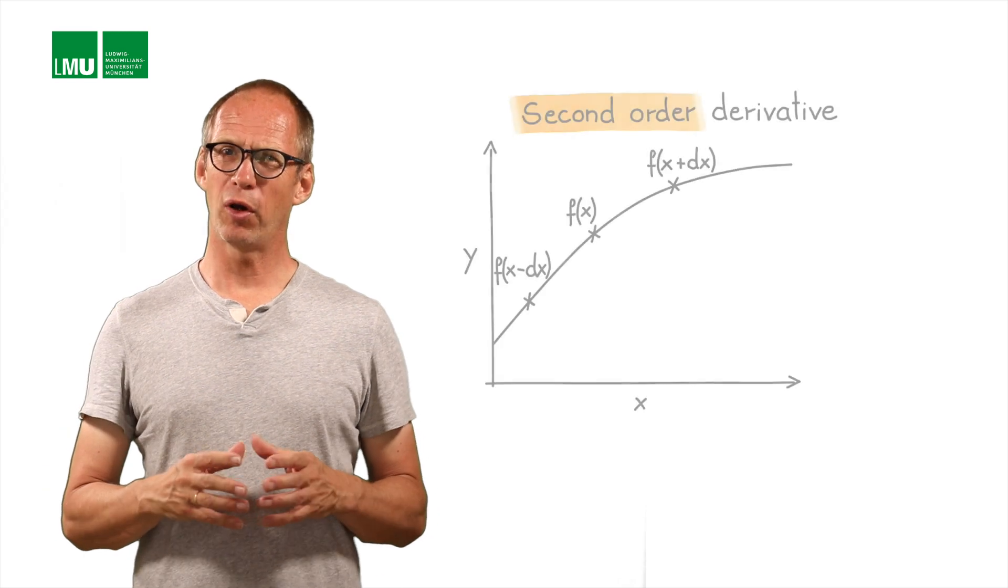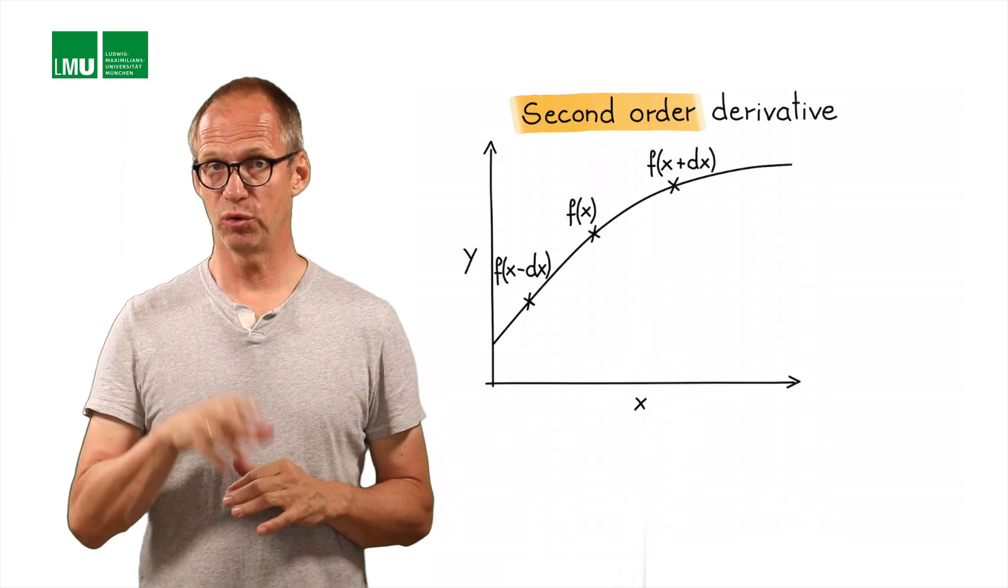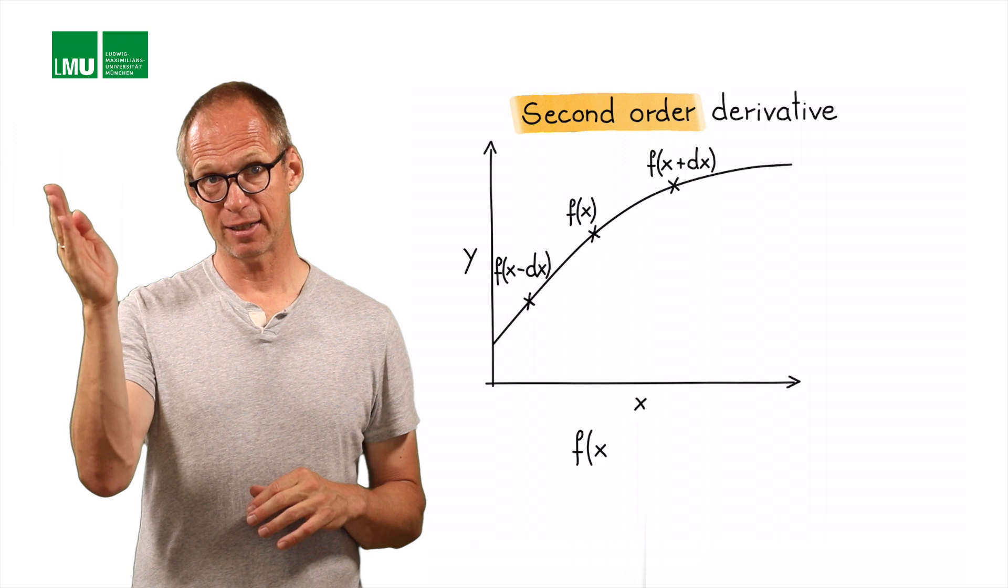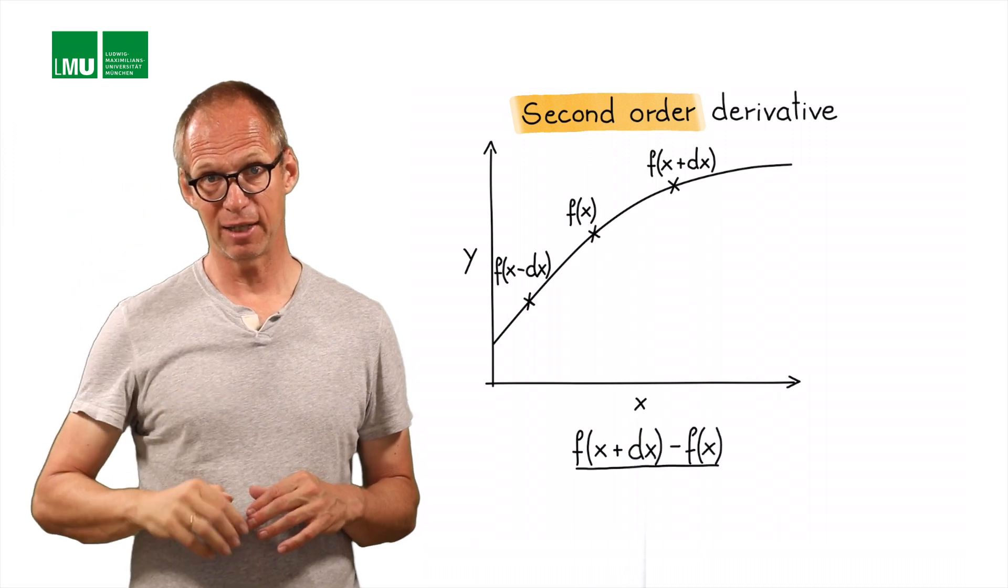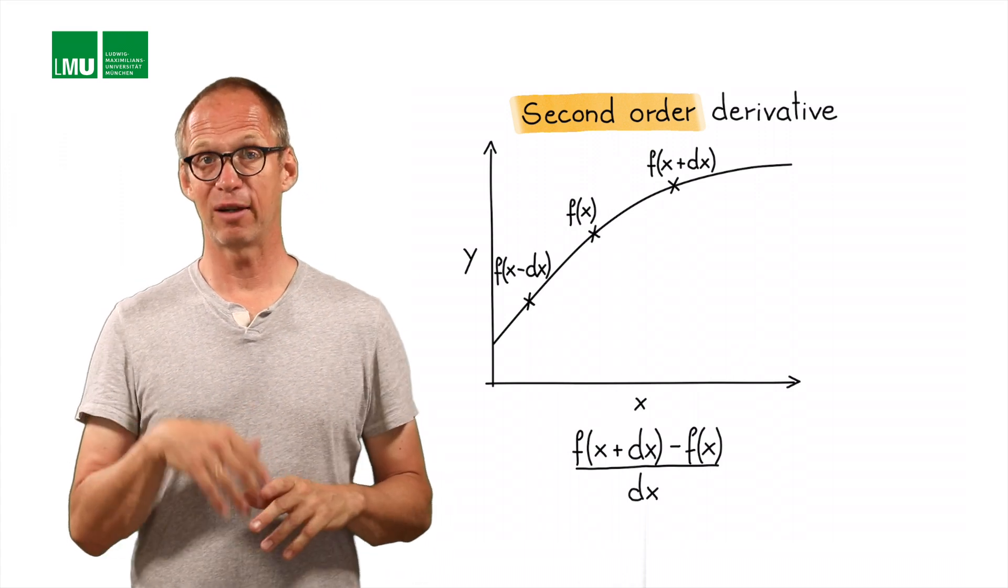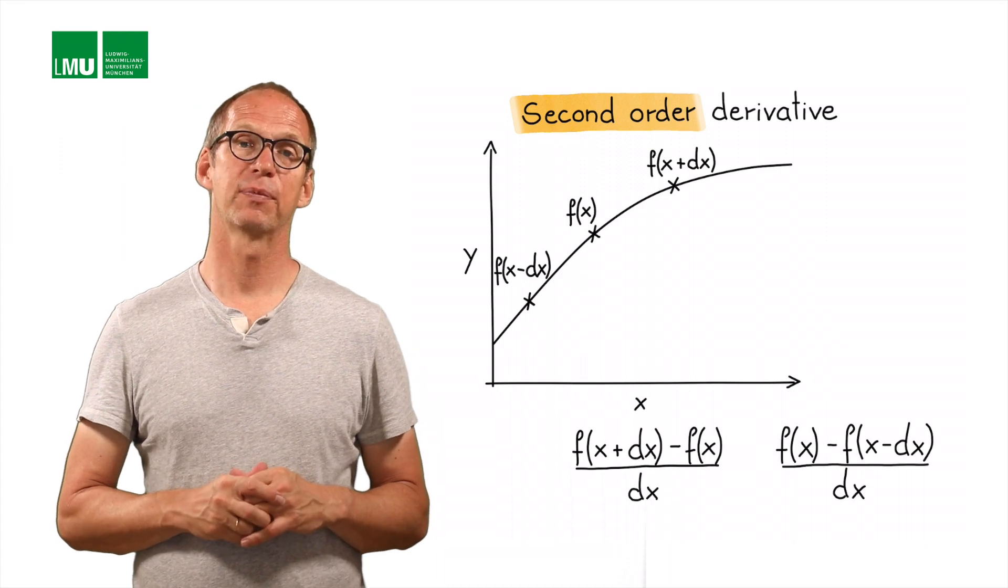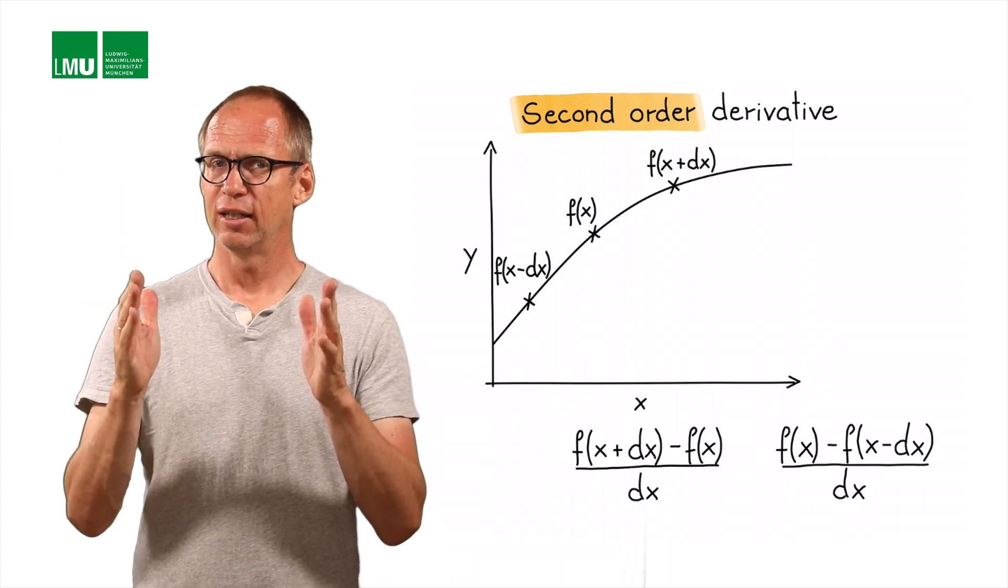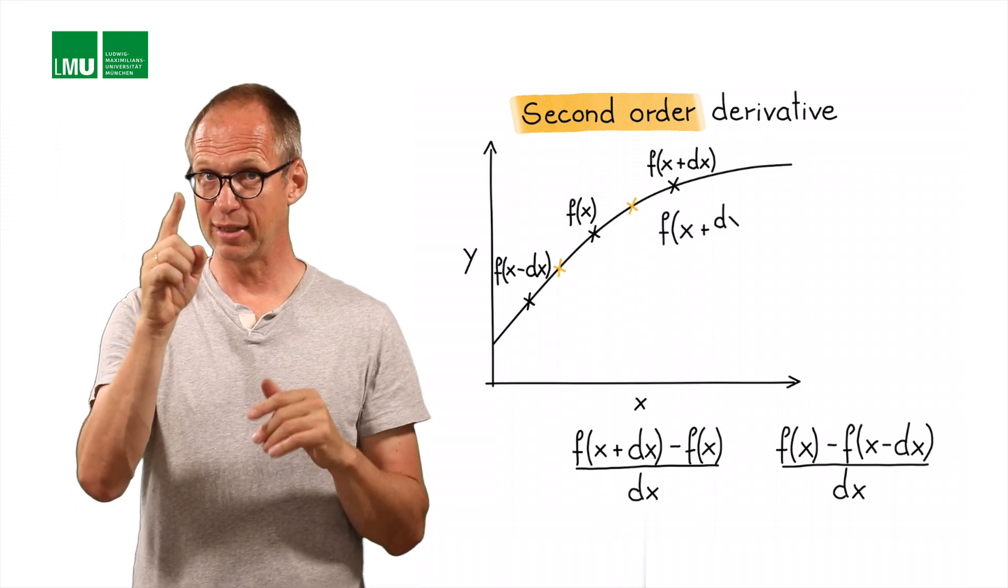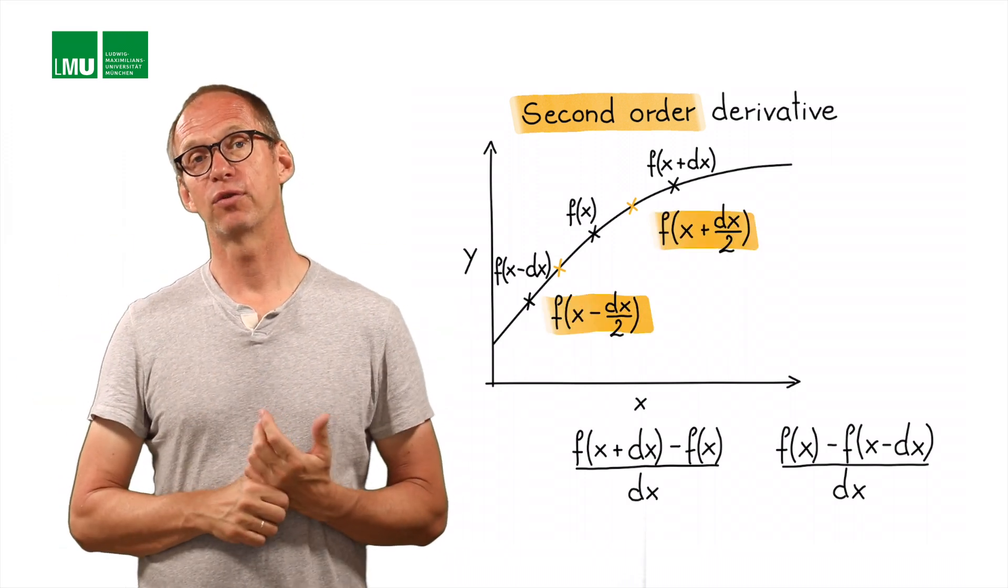Let's take our three points that we see here. Let's first use the two right points to calculate a first derivative: f of x plus dx minus f of x divided by dx. We calculate another derivative to the left: f of x minus f of x minus dx divided by dx. Those two derivatives are defined at the points x plus dx over 2 and x minus dx over 2, but let's not worry about this for the moment.